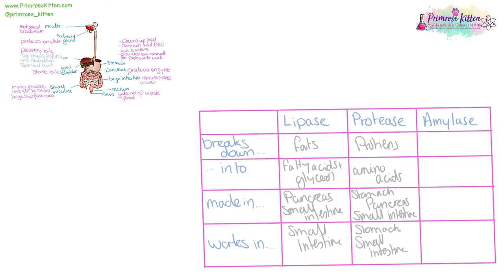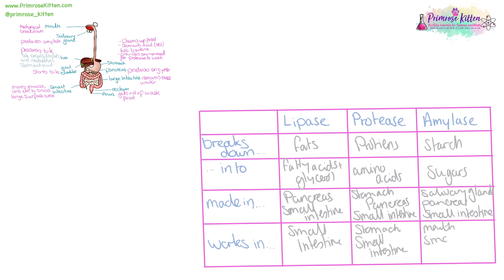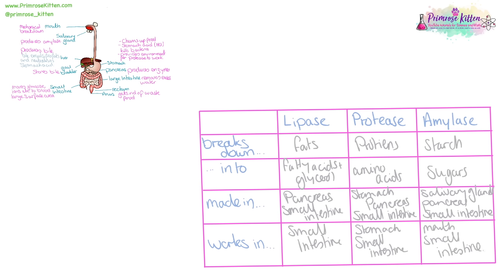Amylase breaks down starch into sugars. It is made in the salivary glands, pancreas, and small intestine, and it works in the mouth and small intestine. Amylase, protease, and lipase are all enzymes and work with the lock and key mechanism.